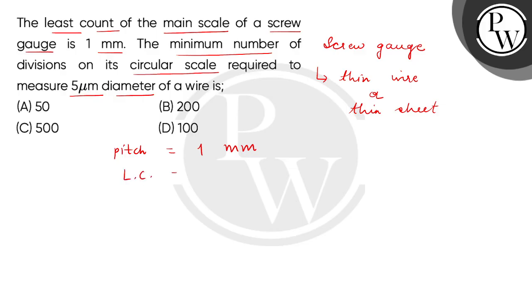So this least count is 5 micrometer. We will convert: the pitch is 10 to the power of minus 3 meter, and the least count is 5 multiplied by 10 to the power of minus 6 meter. We have to find how many divisions.